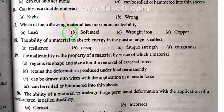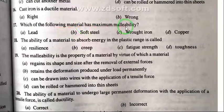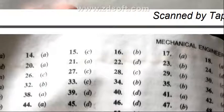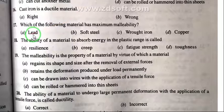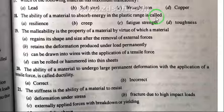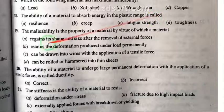Question 16: Cast iron is a ductile material — true or false? The answer is wrong/false. Cast iron is not a ductile material. Question 17: Which of the following material has maximum malleability — lead, soft steel, wrought iron, or copper? The right answer is lead.